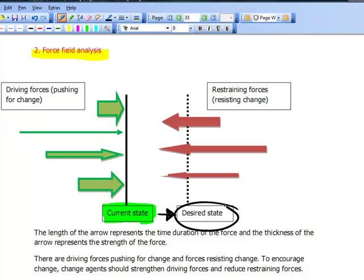Now, there will be various forces pushing for change. And in the diagram here, these are the green arrows. So these are the driving forces, which are pushing for change. On the other side, you'll see restraining forces. So these are the forces which are resisting change. These are the forces that do not want the change.